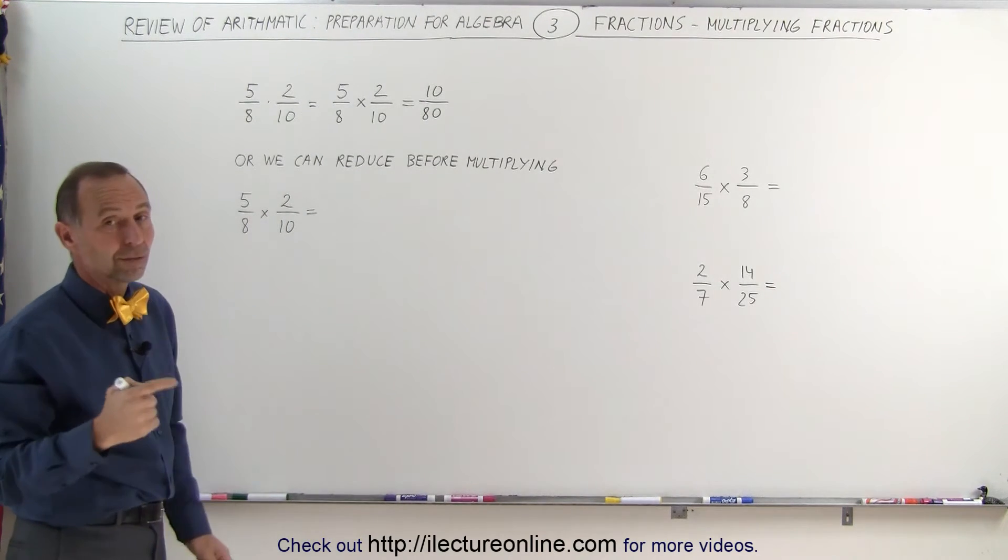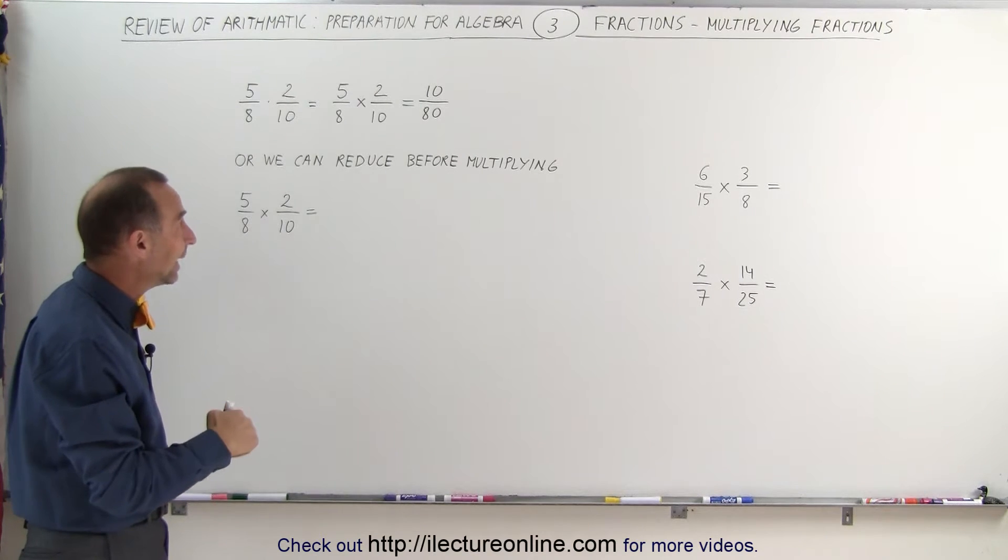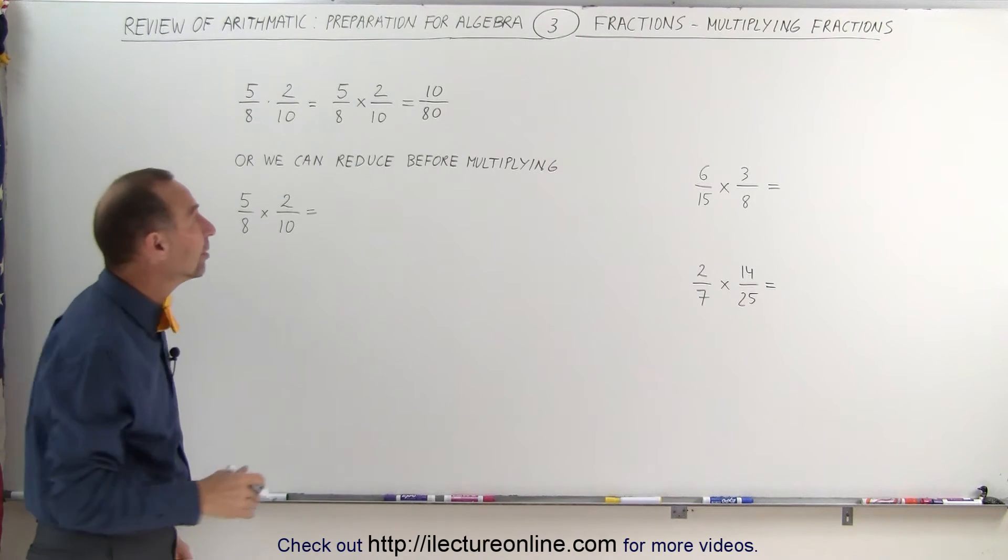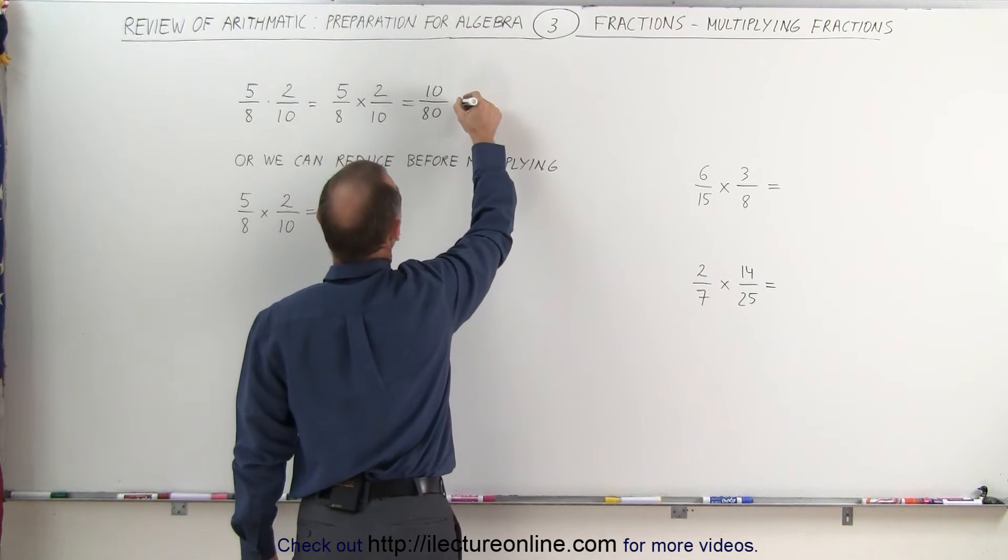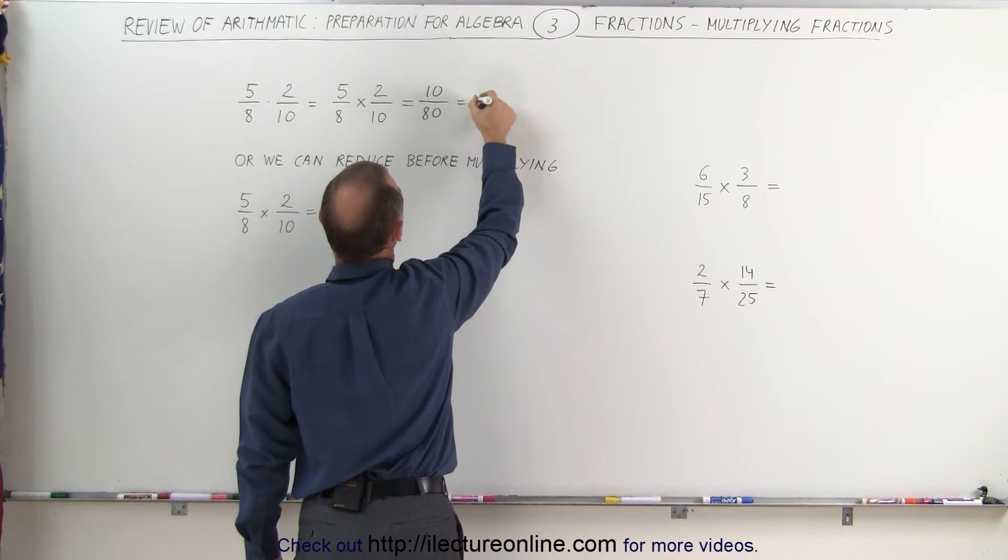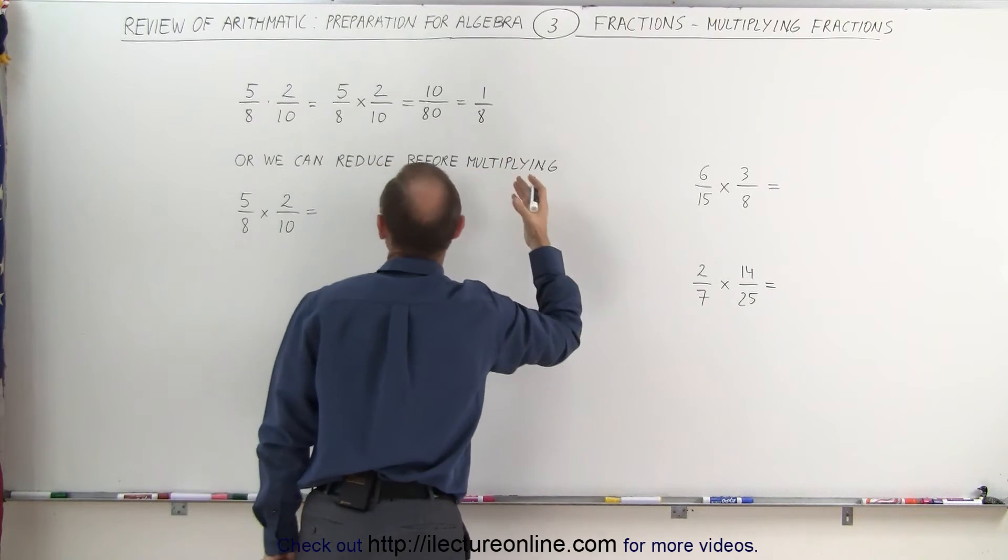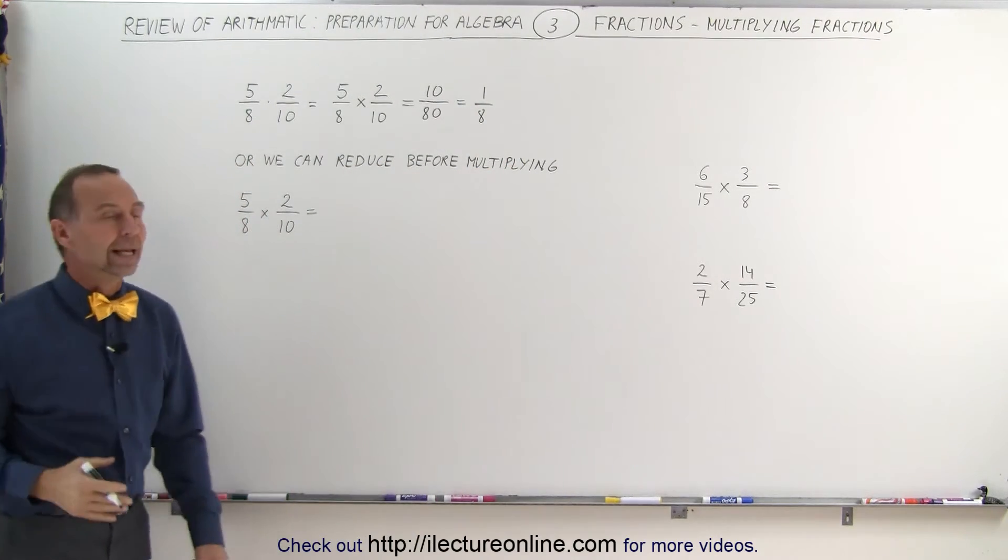And then we can try to reduce the fraction if it's reducible. In this case it is. You notice that both the numerator and the denominator can be divided by 10. That's because they both end in a zero. Divide the numerator by 10, that is equal to 1. Divide the denominator by 10, that's equal to 8. And ultimately the result of 5/8 times 2/10 is 1/8.